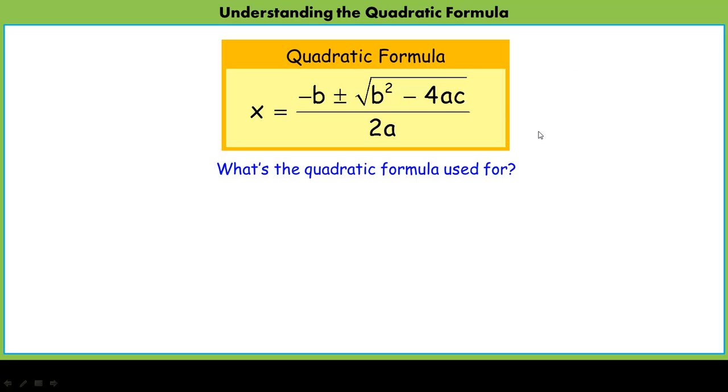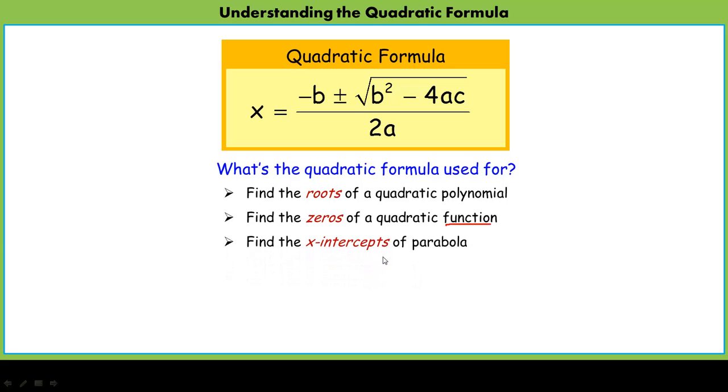What do we use it for? Well, we use it for a couple things, and they have very subtle differences. One is to find the roots of a quadratic polynomial, find the zeros of a quadratic function, and to find the x-intercepts of a parabola. The quadratic formula will not only find these things, but it'll also tell you if they even exist.